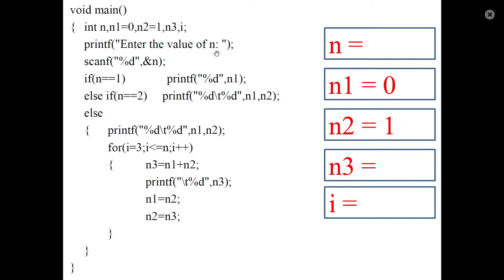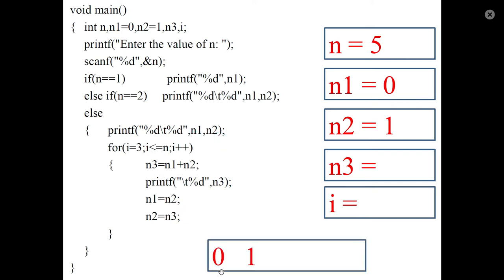Enter the value of N — how many numbers to display. If N is equal to 1, display N1 which is 0. If N is equal to 2, display N1 and N2, that is 0 and 1. Otherwise, for N greater than 2, directly print N1 and N2 as the first two numbers, then display the remaining numbers.